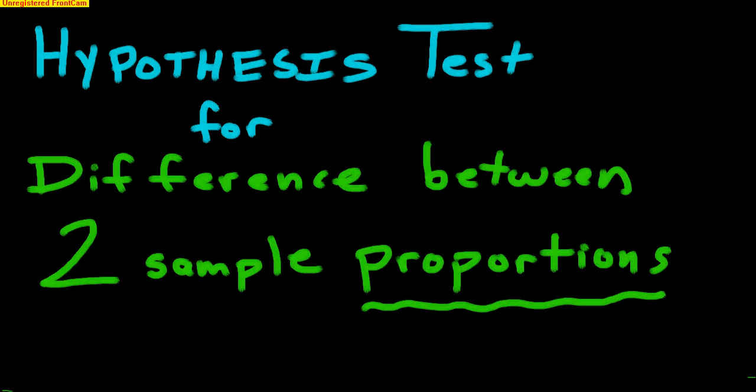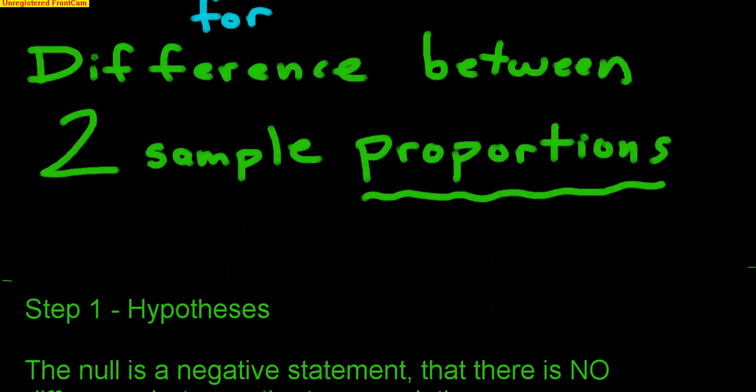Maybe there really is no difference and we're just seeing a difference. You have to understand that any time you look at two samples, there's going to be a difference between them. You just have to determine: is that difference significant or not? And that's what we're going to learn about.